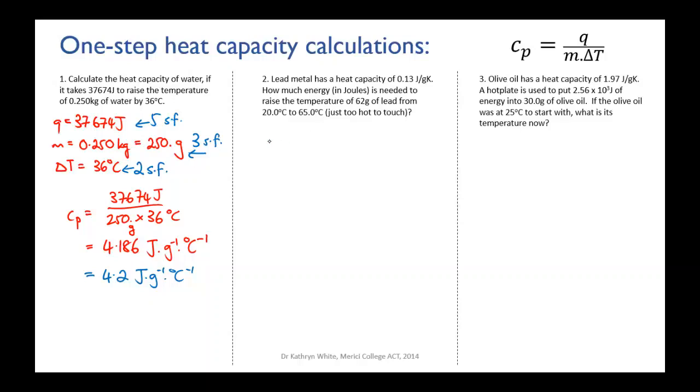So let's write down what we know. We have the heat capacity of lead. Now that's another way of writing the units. It means exactly the same thing. Joules per gram per kelvin. That second way of writing it there is probably more correct. We also know the mass of the lead, 62 grams. And we can work out the temperature change. We've got delta T. Our final temperature is 65.0. Our initial temperature was 20.0. So our change in temperature is 45.0 degrees Celsius. Don't lose that point zero. That's a significant figure.